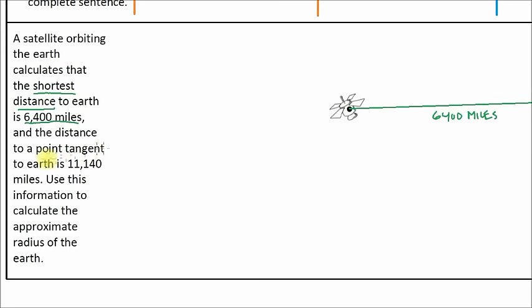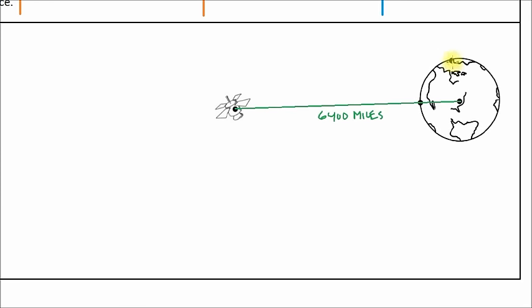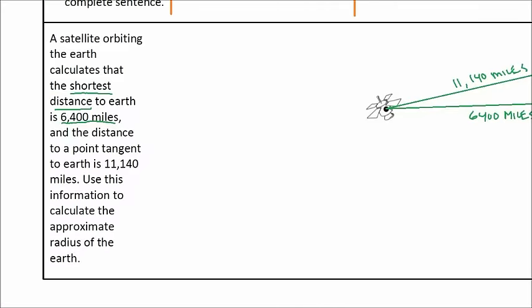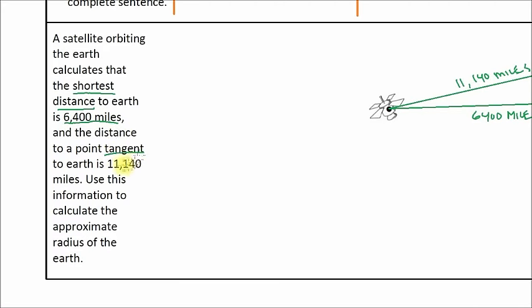There's our first point. And it says the distance to a point tangent to Earth is 11,140 miles. I've already put a point on Earth so you can see where that's at. Here's a point tangent. Let's go ahead and draw that line segment from the satellite to a point tangent to the Earth. And it says that that distance is 11,140 miles. So there's a point tangent to Earth is 11,140 miles. Use this information to calculate the approximate radius of the Earth.